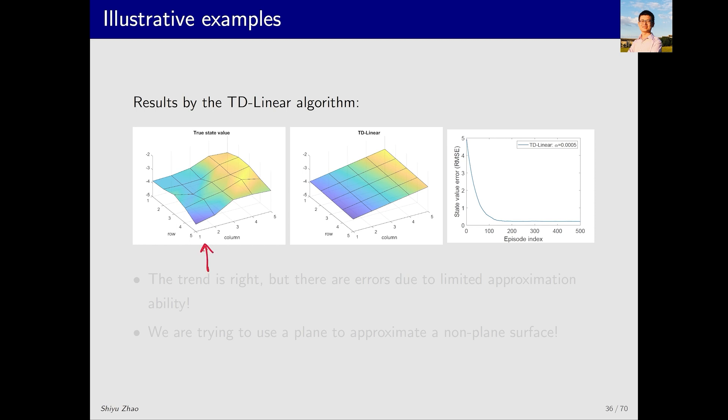Then let's substitute the feature vector we just defined into the tdLinear algorithm. This is the true state value, and this is the state value learned by tdLinear. As you can see, the trend is correct. The values on the left are generally smaller, while those on the right are generally larger. However, the state value estimates at many specific points are not very accurate. This can also be seen on the right side. Although it eventually converges, the final convergence error is not zero. Why is this?